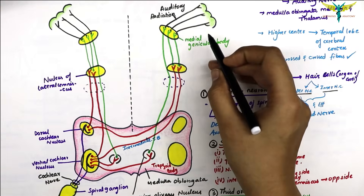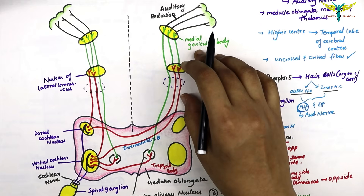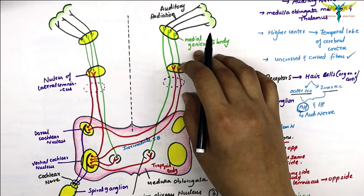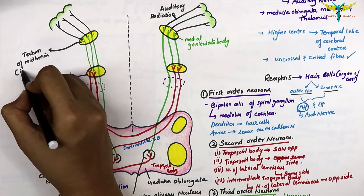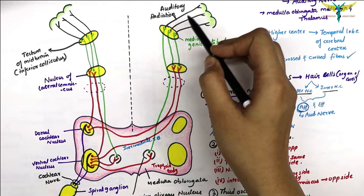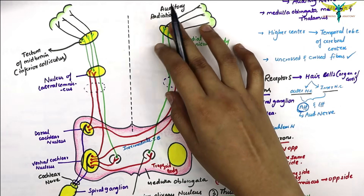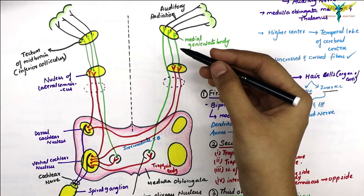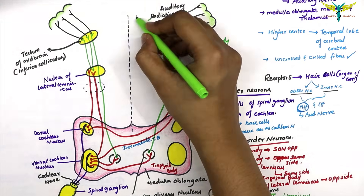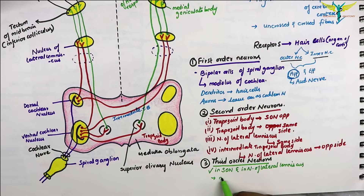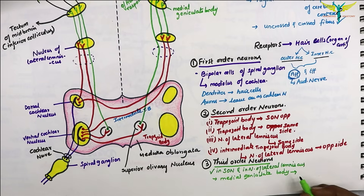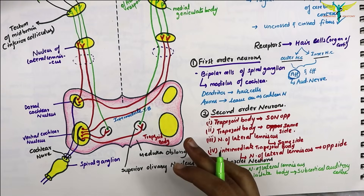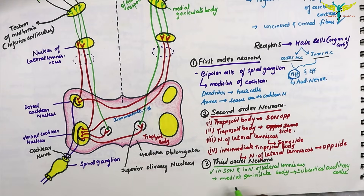Some fibers from the medial geniculate body also go to the inferior colliculus of the tectum in the midbrain. The fibers of the auditory radiation are involved in the reflex movement of the head in response to auditory stimuli. The fibers end in the medial geniculate body forming the subcortical auditory center, and from there go to the temporal cortex via the internal capsule.